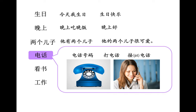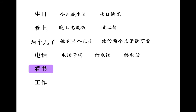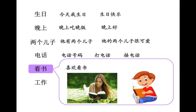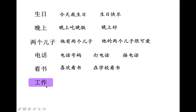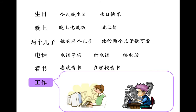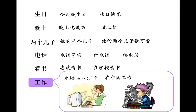下一个，看书。他在看书。他呢，也在看书。他喜欢看书。在哪儿看书？在学校看书。最后一个，工作。他在工作，他也在工作。他的工作是，对，介绍工作。在哪儿工作？在中国工作。他工作怎么样？很忙。